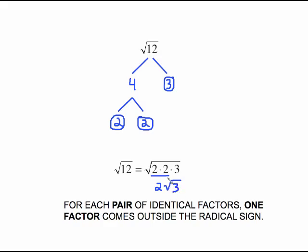And 3 will stay inside the radical. The reason this works is if you just look at the 2 times the 2, 2 times 2 is 4. What's the square root of 4? It's 2. So that's why we say for each pair of identical factors, one of those factors comes outside, and then anything left over stays inside the radical. So it's pairs on the outside, leftovers on the inside.